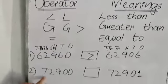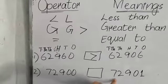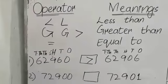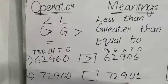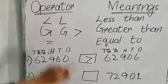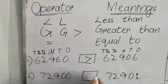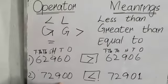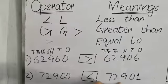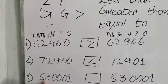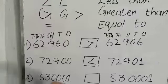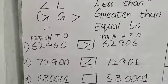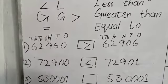The next comparison is 530,000 and 530,001. Wait — both values are the same, so we use the equal sign. Students should practice identifying which sign to use based on comparing digits from the highest place value.